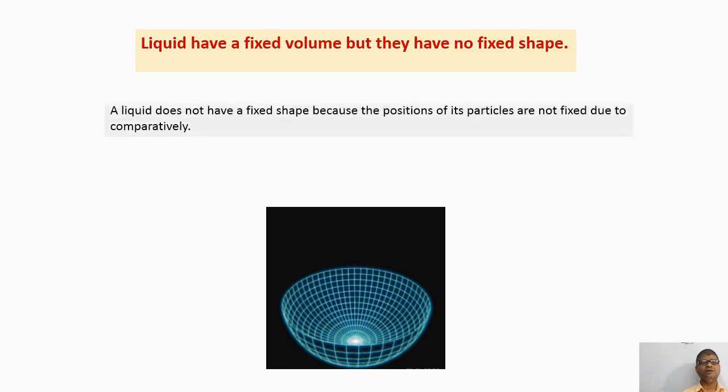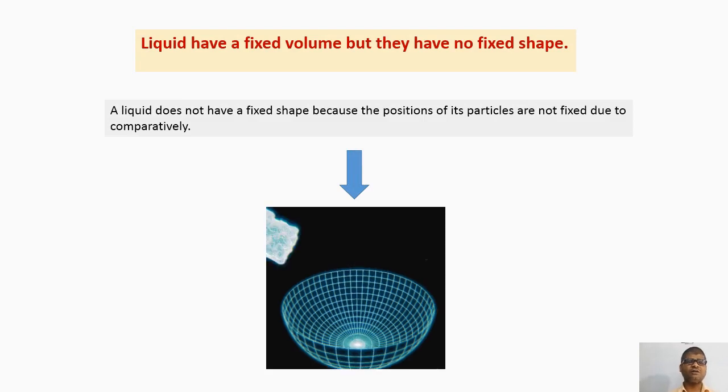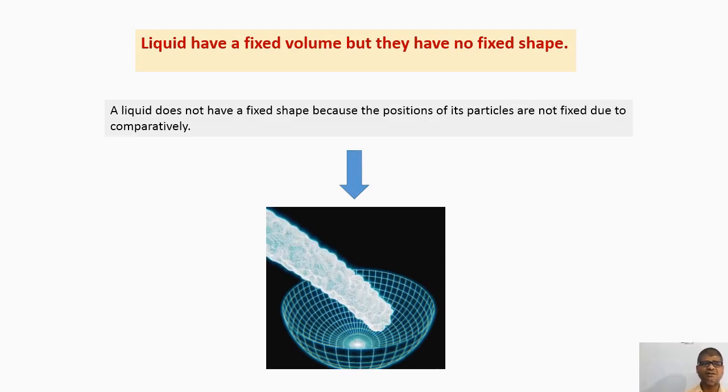A liquid does not have a fixed shape because the position of its particles are not fixed, due to comparatively weaker inter-particle forces.